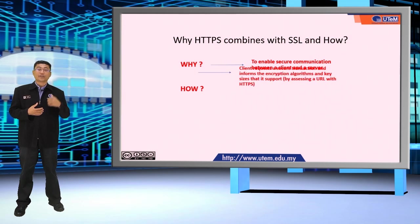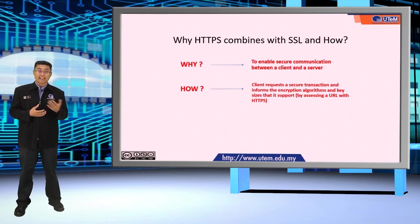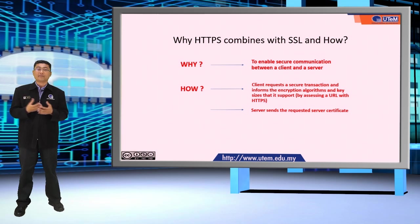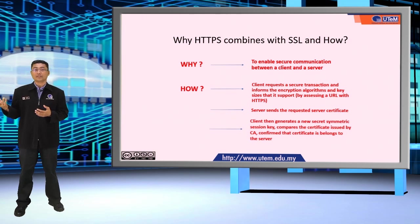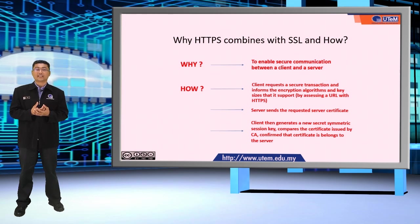Firstly, the client requests a secure transaction and informs the server of the encryption algorithm and key size it supports by accessing a URL with HTTPS. Next, the server sends the requested server certificate — an encrypted server public key and a list of supported ciphers and key sizes in order of priority. The client then generates a secret symmetric session key based on the priority list sent by the server. The client also compares the certificate issued by the CA and confirms that the certificate belongs to the server intended for the communication.